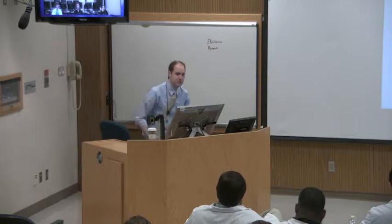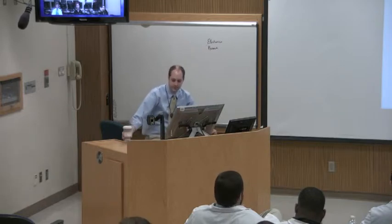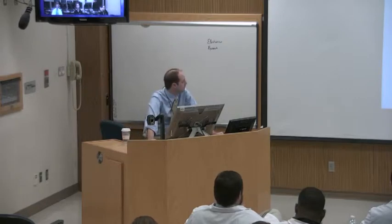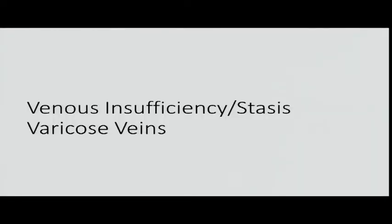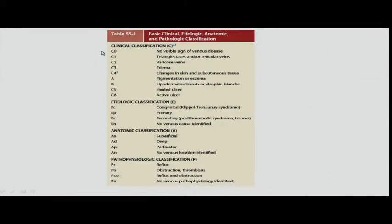Now, venous insufficiency, venous stasis, varicose veins. This is the CEAP classification — like the TNM of varicose veins, except not as important because it's not cancer. The clinical classification goes from asymptomatic all the way up: C4 is stasis dermatitis, C5 is a healed ulcer, C6 is an active ulcer. Those are indicated for treatment if you have skin changes or ulceration.